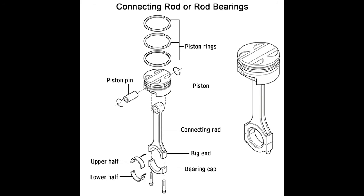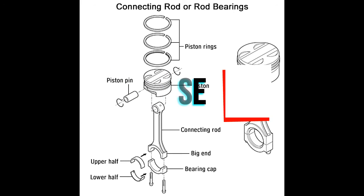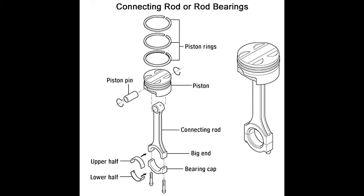Purpose. The gas-air mixture in each cylinder of an engine explodes and pushes the pistons downwards. The up-down motion of each piston is converted into rotation of the crankshaft by connecting rods. However, the connecting rod is under tremendous strain, because it is connected to two parts which move in different directions. Therefore, rod bearings are inserted where the rod comes into contact with the crankshaft. The rod bearings help the connecting rods rotate the crankshaft without breaking under pressure.